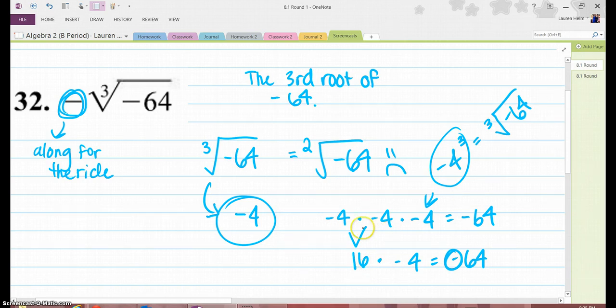A negative times a negative equals a positive. But if you multiply it another time by a negative, which is a positive times a negative, you'll get a negative number, which is negative 64, which is right here.